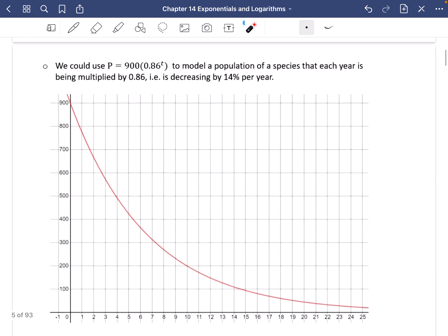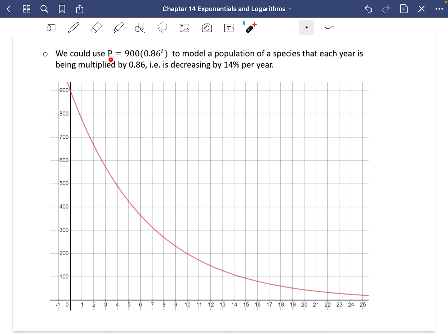I've also got a different example here. This time I said we could use this formula, P equals 900 multiplied by 0.86 to the power of T. And this could model a population of an animal species that each year is being multiplied by 0.86. And if it's multiplying by 0.86, that means it's actually decreasing by 14%. Multiplying by 0.86 is equivalent to decreasing something by 14%. So this population, that when it's at 0, it looks like this population is starting at 900. It looks like each year, it is going to be decreasing by 14%. And so you get this curve, which is an exponential type curve, that says how the population is going to change.